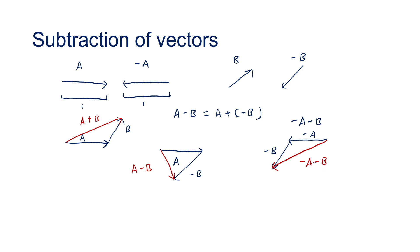You can see that minus a minus b actually equals negative of a plus b. The a plus b vector and the minus a minus b vector have the same magnitude — the same length — but point in opposite directions. The difference is just the extra negative, meaning it points toward the opposite direction. That is what is meant by a negative vector.